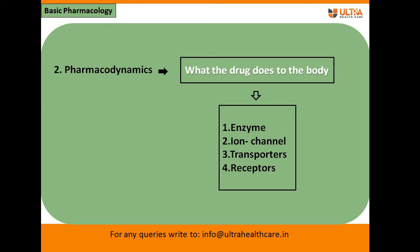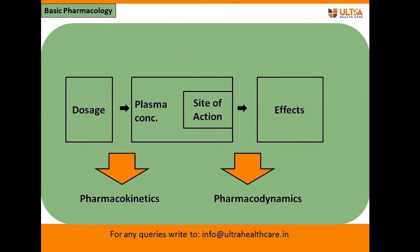Second, we have pharmacodynamics, which means what the drug does to the body. After all the processes of ADME — absorption, distribution, metabolism, and excretion — pharmacodynamics describes how the drug shows its therapeutic effect. The majority of drugs produce their effects by interacting with specific targets. There are four major drug targets: enzymes, ion channels, transporters, and receptors.